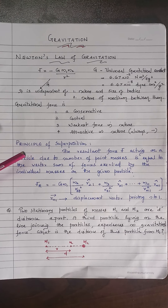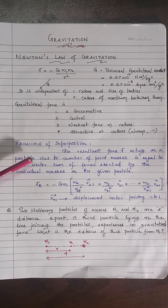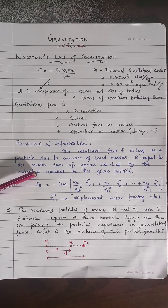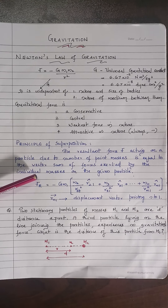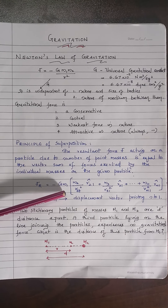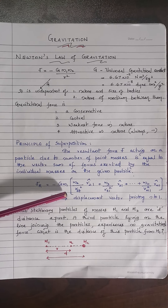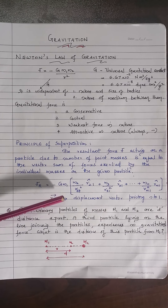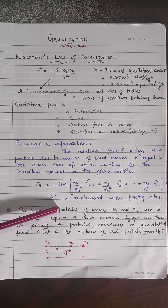Another very important concept to solve problems is the principle of superposition. The resultant force F acting on a particle due to a number of point masses is equal to the vector sum of forces exerted by the individual masses on the given particle. In the vector form of the gravitation concept, the force on one due to the other masses 2, 3, etc. up to n can be represented, where n̂₁ is the displacement vector pointing from n to 1.